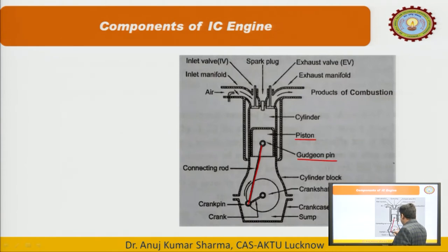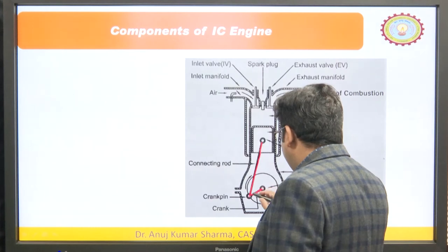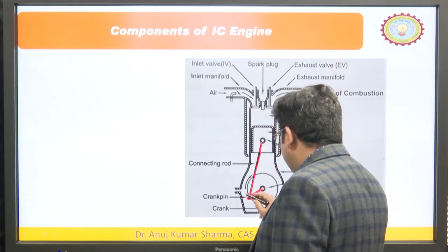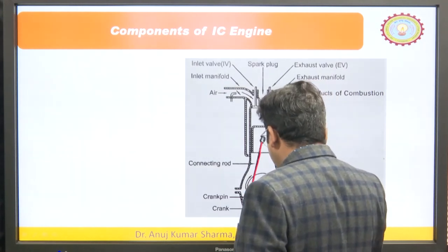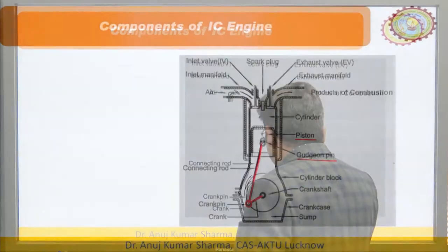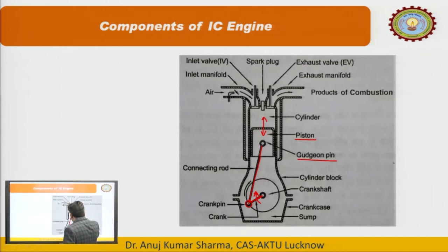This connecting rod connects to the crank via the crank pin. It has one degree of freedom, meaning only rotation — this is the rotation of the crank. With this assembly we are converting the reciprocating motion of the piston inside the cylinder into the rotary motion of the crank. This is essentially a four-bar mechanism.